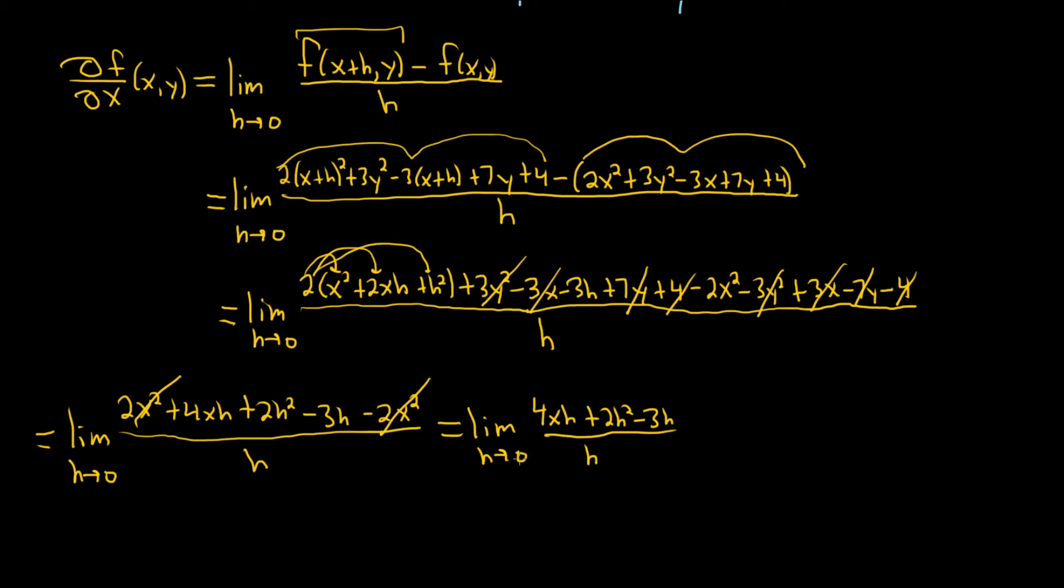We're not quite there yet. So what we can do now is we can factor out an h in the numerator. So this is equal to the limit as h approaches 0. Let's pull out an h. So here we have 4x plus 2h minus 3. That's all over h. Boom.